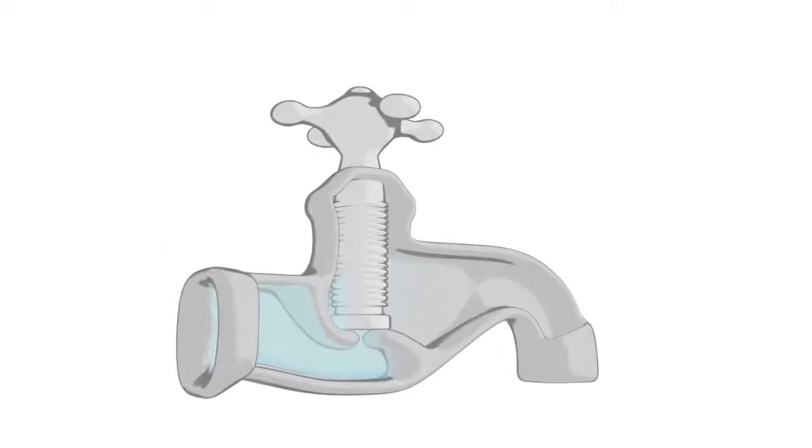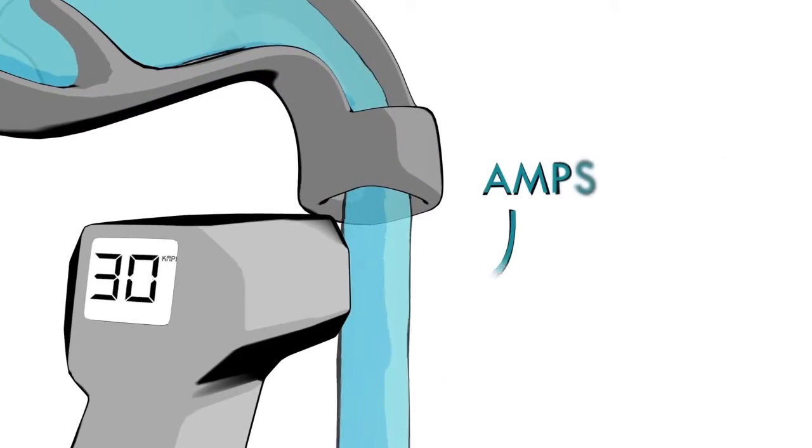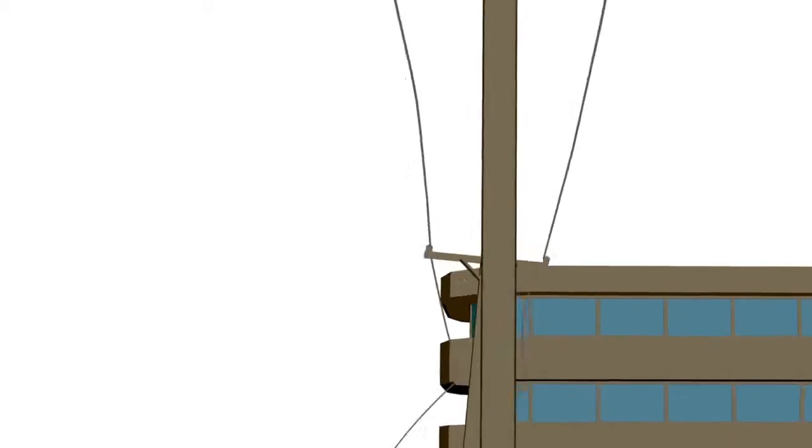It's like volts are the amount of water stored behind a closed faucet. When you turn the tap, you release the water. The speed of the water rushing by is the amps. Different devices require different amounts of volts and speed of amps.